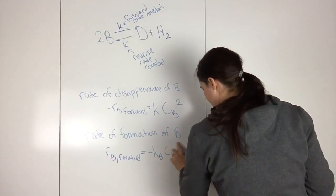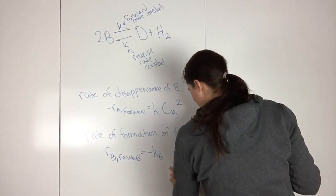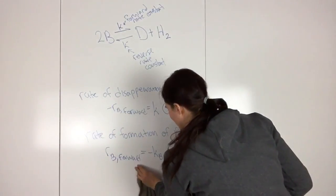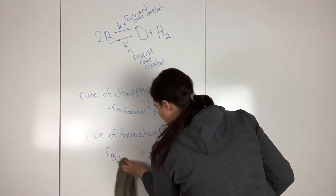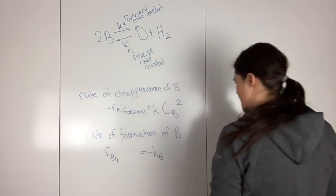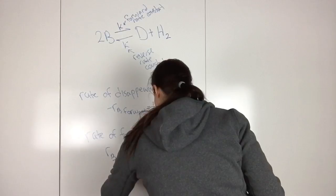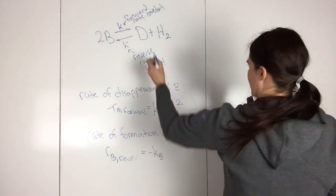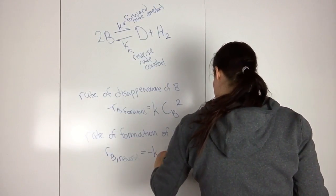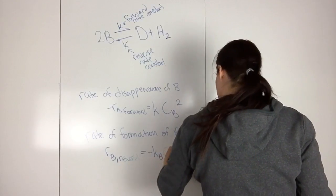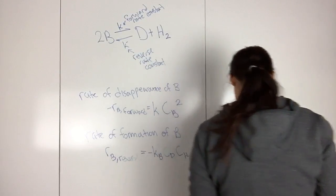So this is RB, that's not right. I wrote this wrong. So this is RB reverse, and so then that would be CD CH2.